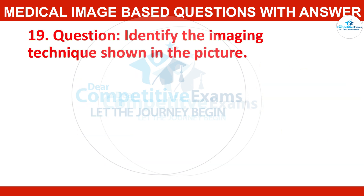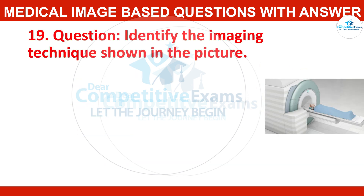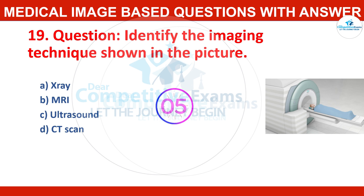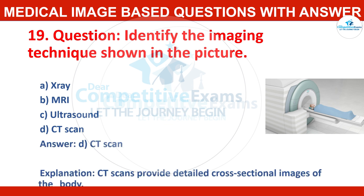Question number nineteen: identify the imaging technique shown in the picture. Options: X-ray, MRI, ultrasound, or CT scan? Correct answer: CT scan. CT scan provides detailed cross-sectional images of the body.